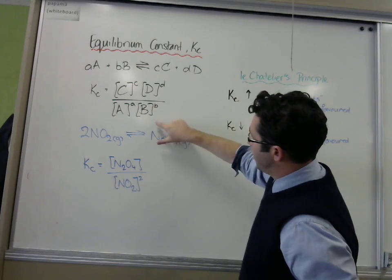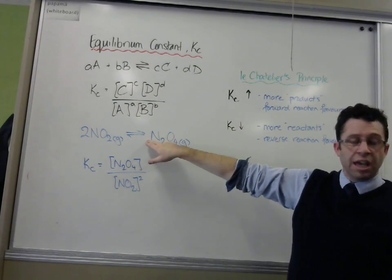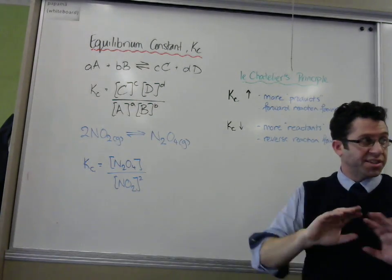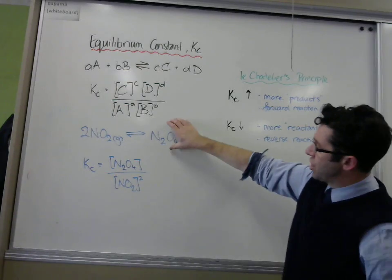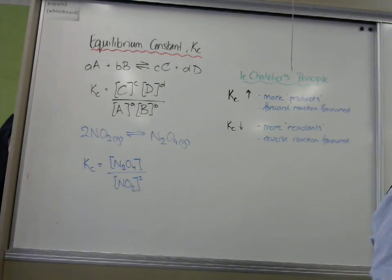This one here is your N2O4. Because there's no number in front of it, it means that we don't put any exponent here. It's just its concentration. So the concentration of this divided by the concentration of this squared will give us our equilibrium constant.